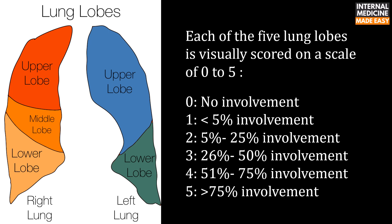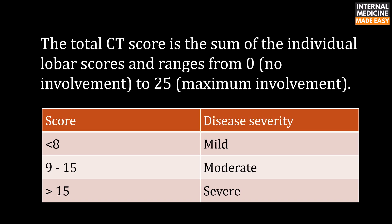CT severity score is a semi-quantitative scoring system used to estimate the pulmonary involvement of COVID-19 related abnormalities on the basis of the area involved. The involvement of each lung lobe is visually scored on a scale of 0 to 5: 0 indicates no involvement, 1 indicates less than 5% involvement, 2 indicates 5–25% involvement, 3 indicates 26–50% involvement, 4 indicates 51–75% involvement, and 5 indicates more than 75% involvement. The total CT score is the sum of the individual lobe scores and ranges from 0 to 25, where 0 indicates no involvement and 25 indicates maximum involvement.